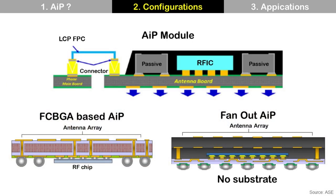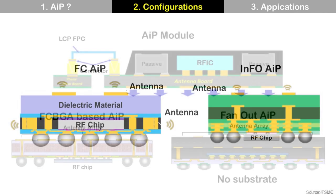These are AIP solutions from ASE. In addition to a typical AIP module, they have a Flip-Chip BGA-based AIP and a Fan-Out AIP, which does not use a package substrate. Package substrate is a main source of signal loss for high frequencies like 5G, so if the package does not use a substrate, it can reduce signal loss.